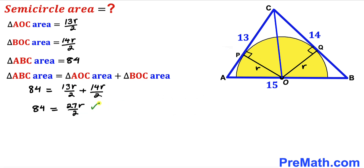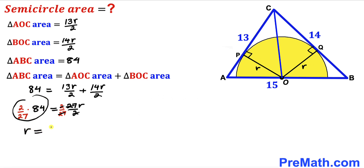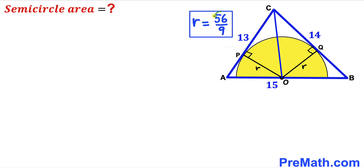We multiply both sides by 2 divided by 27 to isolate radius r. The 27s cancel and the 2s cancel, giving us r equals 84 times 2 divided by 27, which simplifies to r equals 56 divided by 9. So the radius of this yellow semicircle is 56/9 units.